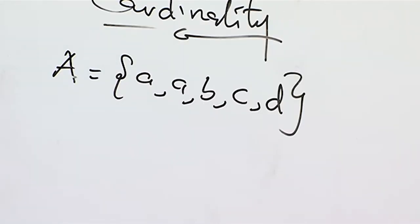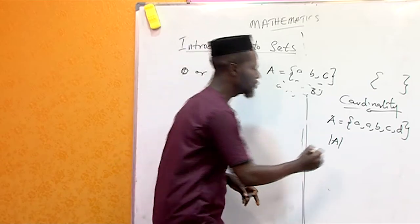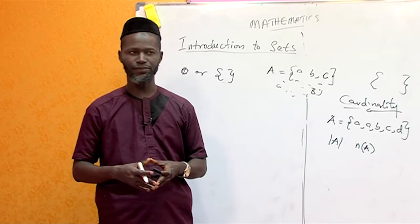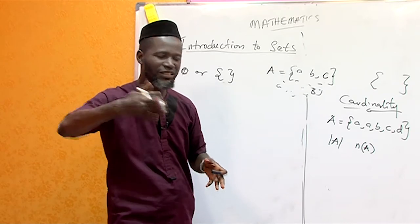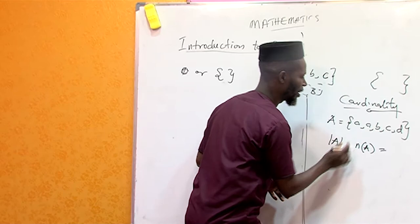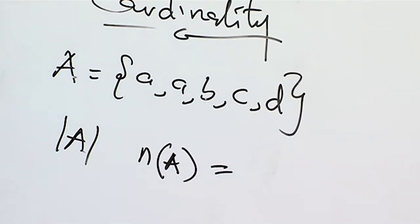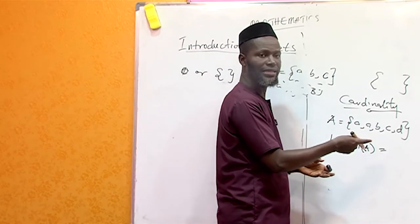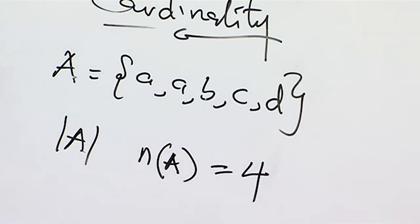There are two ways to denote the cardinal number of a set: either you use absolute value notation |A|, or you use n(A). Both refer to the same thing. For example, if we have set A = {A, A, B, C, D}, and you don't apply 'without repetition,' you'd count five elements. But you do not count any element twice. So you count: A is one, B is two, C is three, D is four. The cardinality of this set is four.